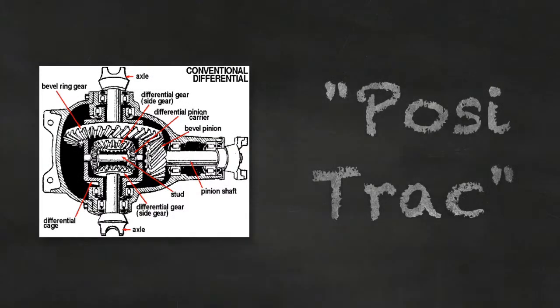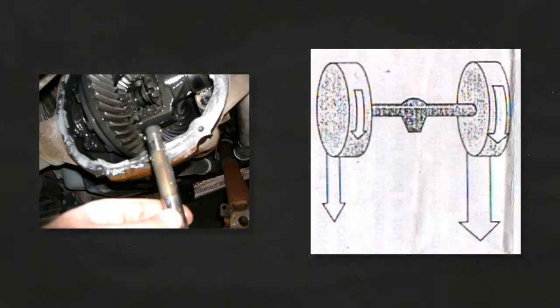The alternative is known as Positrack. With a Positrack differential, there is a piece added which transfers power to both wheels.